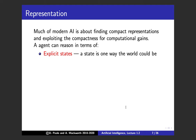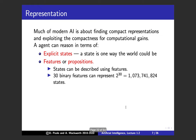Much of AI is about finding compact representations and exploiting that compactness for computational gains. An agent can reason in terms of explicit states — one way the world could be — but often we want to describe states in terms of features or propositions. Thirty binary features can represent over a billion states, so it's much easier to reason in terms of 30 features than billions of states. Many problems have thousands or millions of features, and the number of states is enormous.